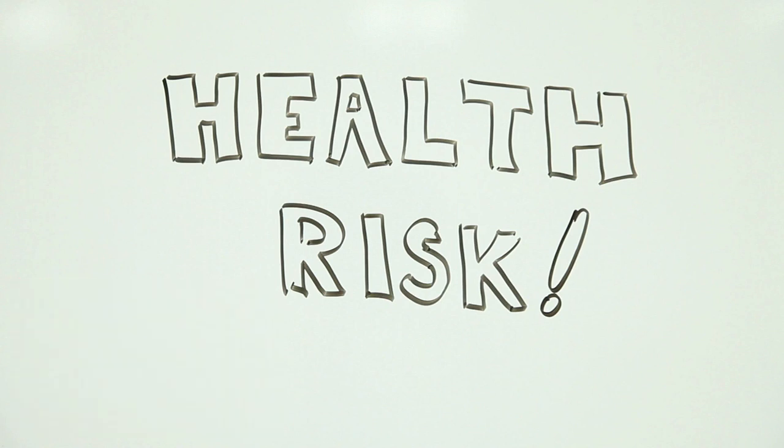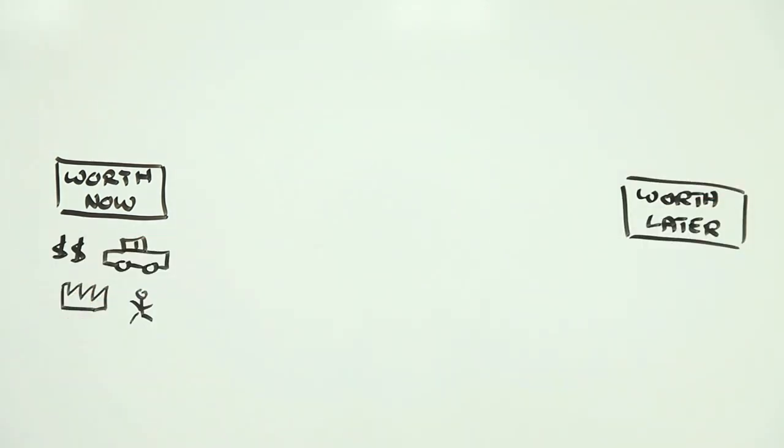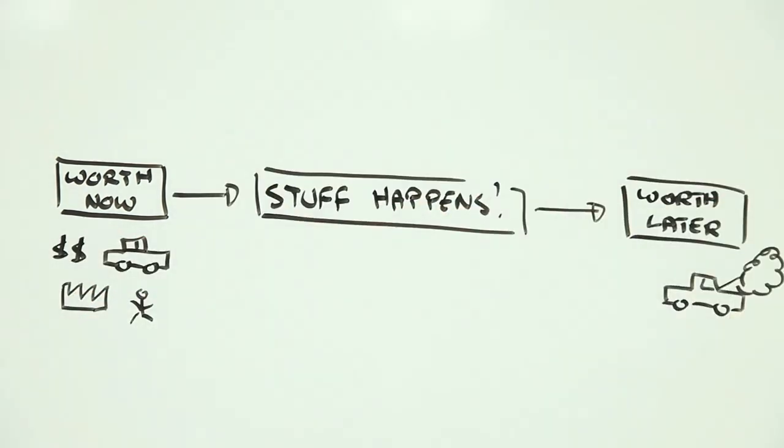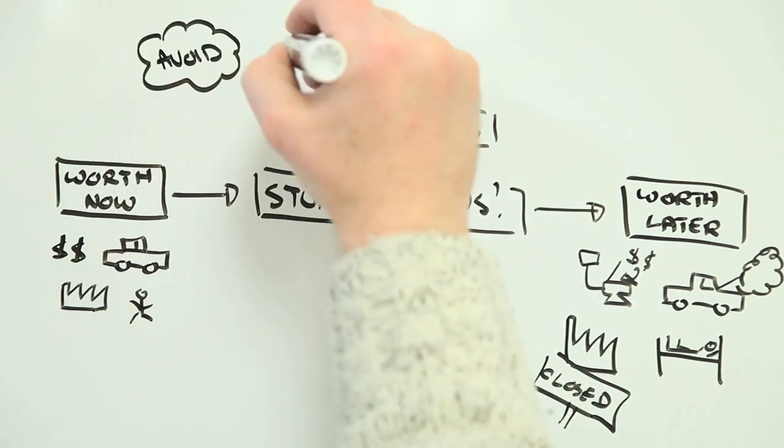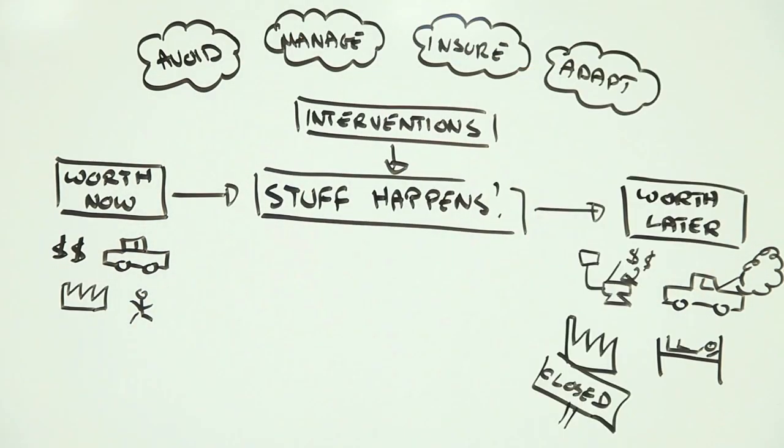To recap, things that are important to us have worth. Bad stuff happens and that worth is diminished. We can reduce this loss of worth or its impacts through avoidance, insurance or adaptation.